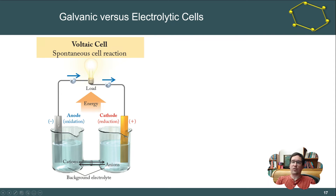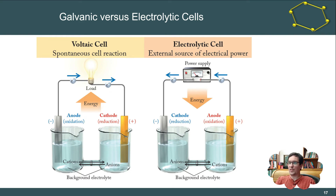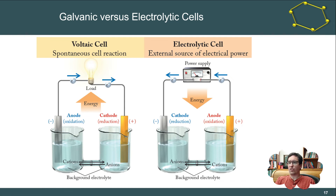As electrons pass from the anode (negative side) to the cathode (positive side), they do electrical work — lighting a light bulb, powering our phones, and so on. An electrolytic cell, by contrast, requires an external power supply. The anode is still the oxidation end losing electrons, and electrons still flow from anode to cathode, but now because we've applied external energy via a power supply, we're driving that reaction backwards.